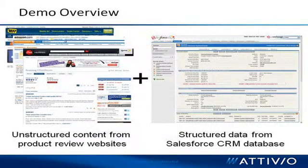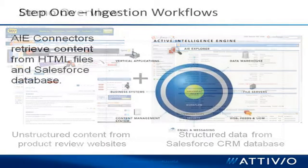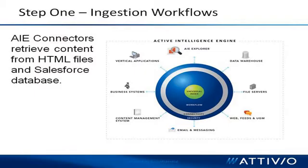What Accenture gave us was a series of raw HTML files from public-facing customer review sites of consumer electronics. We have data from Amazon, Best Buy, and CNET — all covering mobile phones, computers, and audio systems. The first step with this data was to run it through a series of workflows to properly extract the relevant fields and reviews.